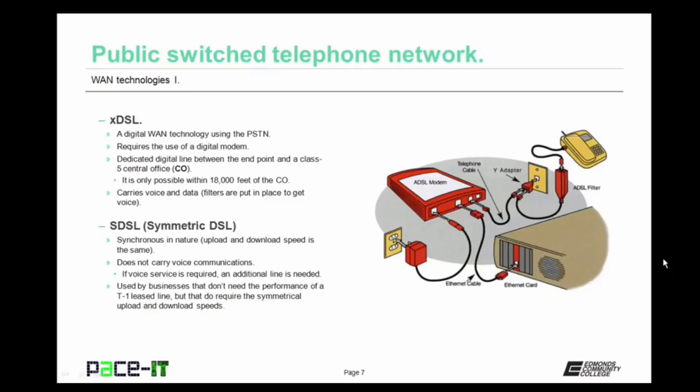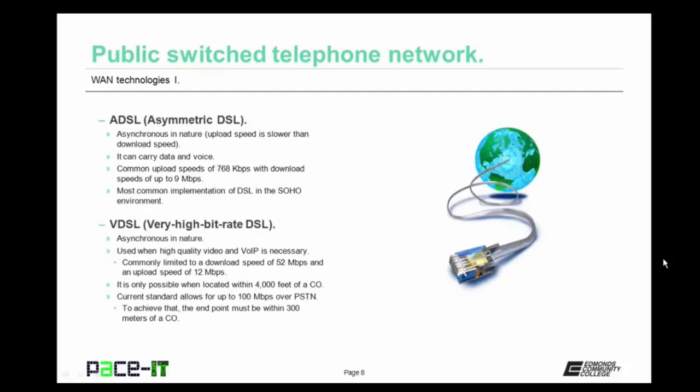First up is symmetric DSL, or SDSL. Symmetric DSL is synchronous in nature — the upload and download speeds are the same. SDSL does not carry voice communication, so if you need voice service, an additional line is needed. SDSL is used by businesses that don't quite need the performance of a T1 leased line but do require the symmetrical upload and download speeds. More common than SDSL is ADSL, or Asymmetric DSL — asynchronous in nature, meaning the upload speed is slower than the download speed.